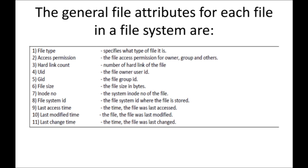File system ID identifies the file system where the file is stored. The UNIX file system is in a hierarchical format, and each file system has an ID so we can identify which file system a particular file belongs to. Different files can be present in different file systems, so we need that ID. Then there are time-related attributes: last access time — when you last accessed your file; last modified time — when you last made changes to your file; and last changed time — when the file was last changed. These are all the attributes of a file in UNIX and POSIX.